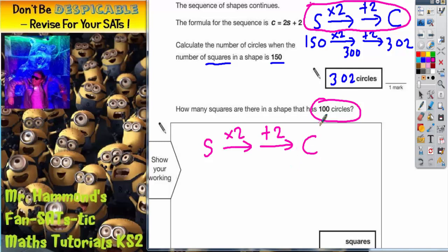But we know that there are 100 circles, so we can write 100 there. But we've got to go backwards to the number of squares. Now when we go backwards, we have to do the opposite of what's written on these arrows. So to undo this add two, we've got to take two.